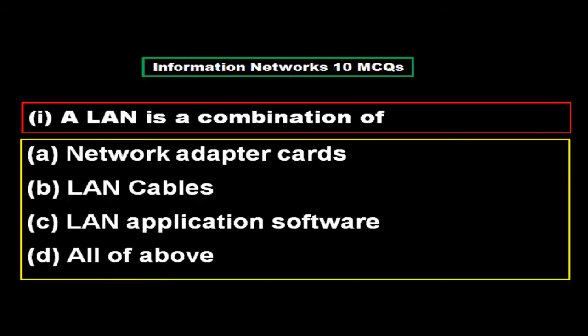Multiple choice questions related to the topic: information networks. A LAN is a combination of: option A network adapter cards, option B LAN cables, option C LAN application software, option D all of the above. The right answer is option D, all of the above.